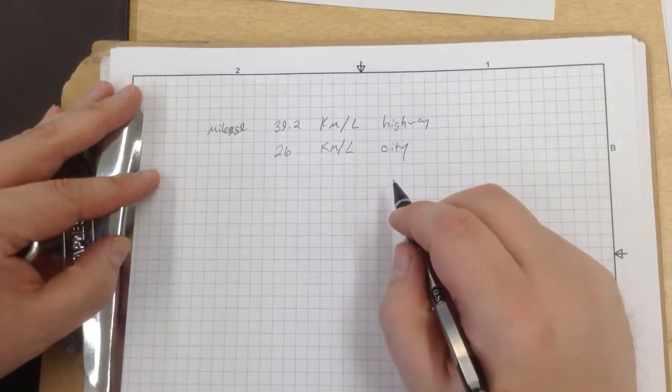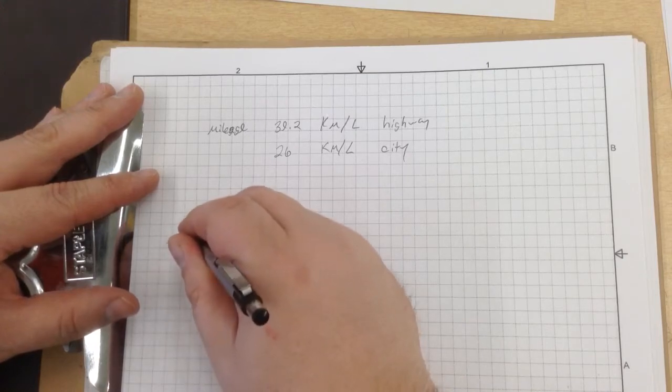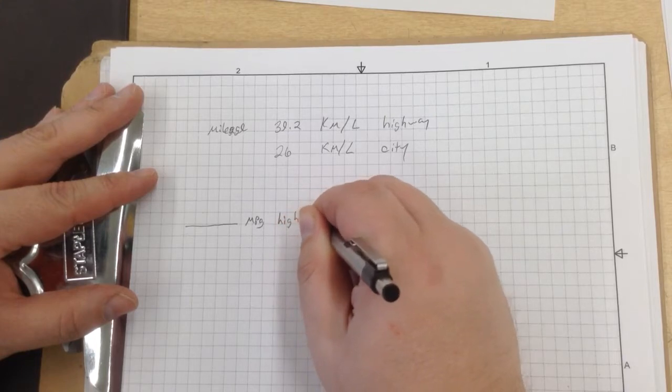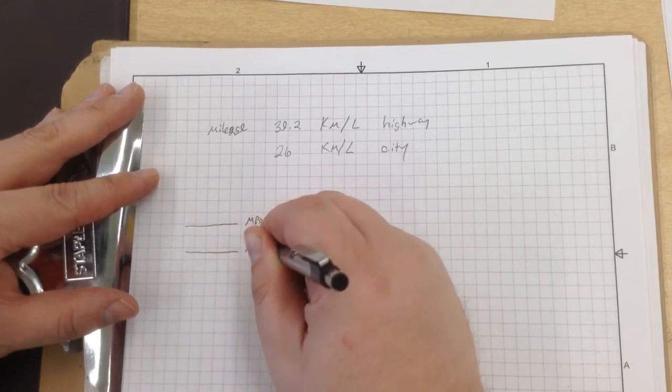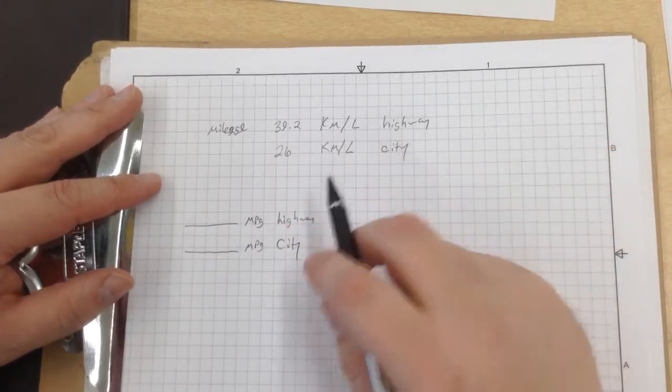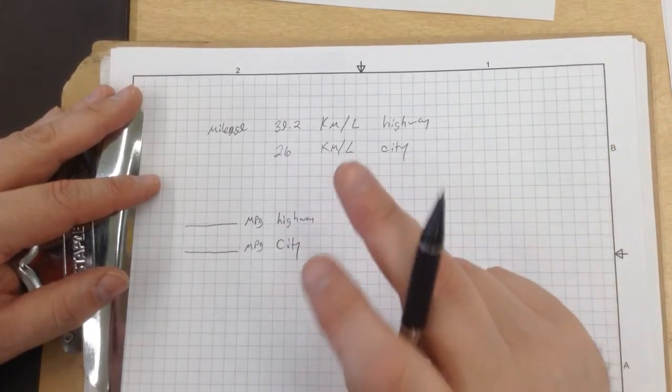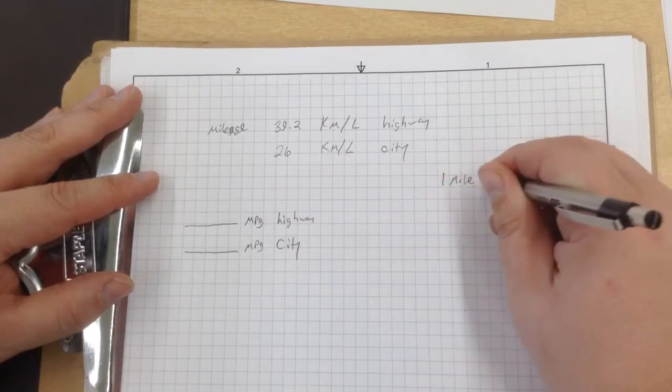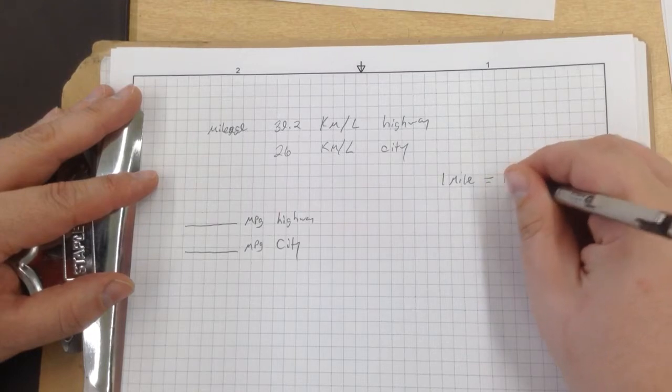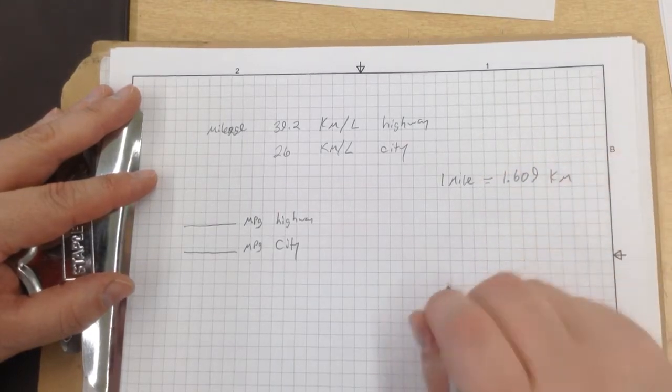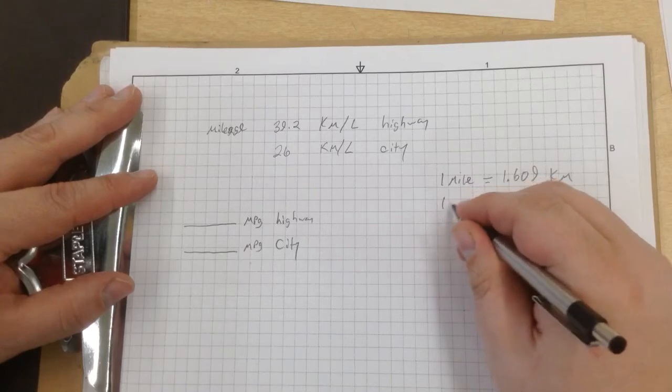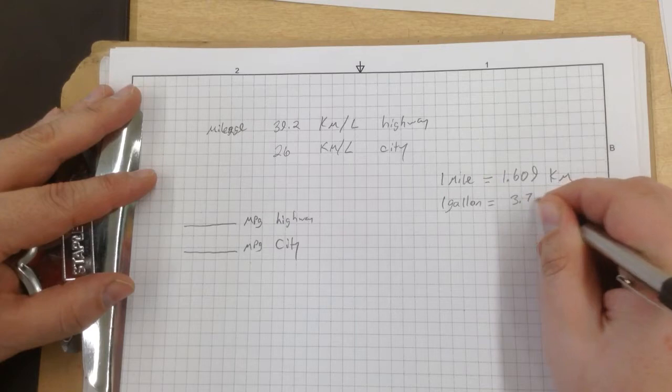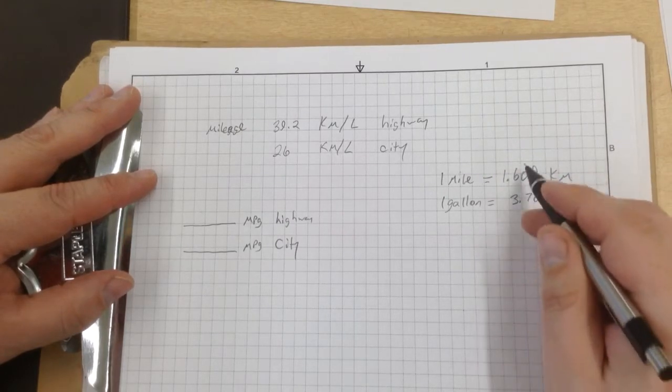We have to convert this into miles per gallon. So that's what we're going to go for. We have: what is mpg highway, and what is mpg city? We've got a few givens: one mile equals 1.609 kilometers, one gallon equals 3.785 liters. Those are equivalencies right here.